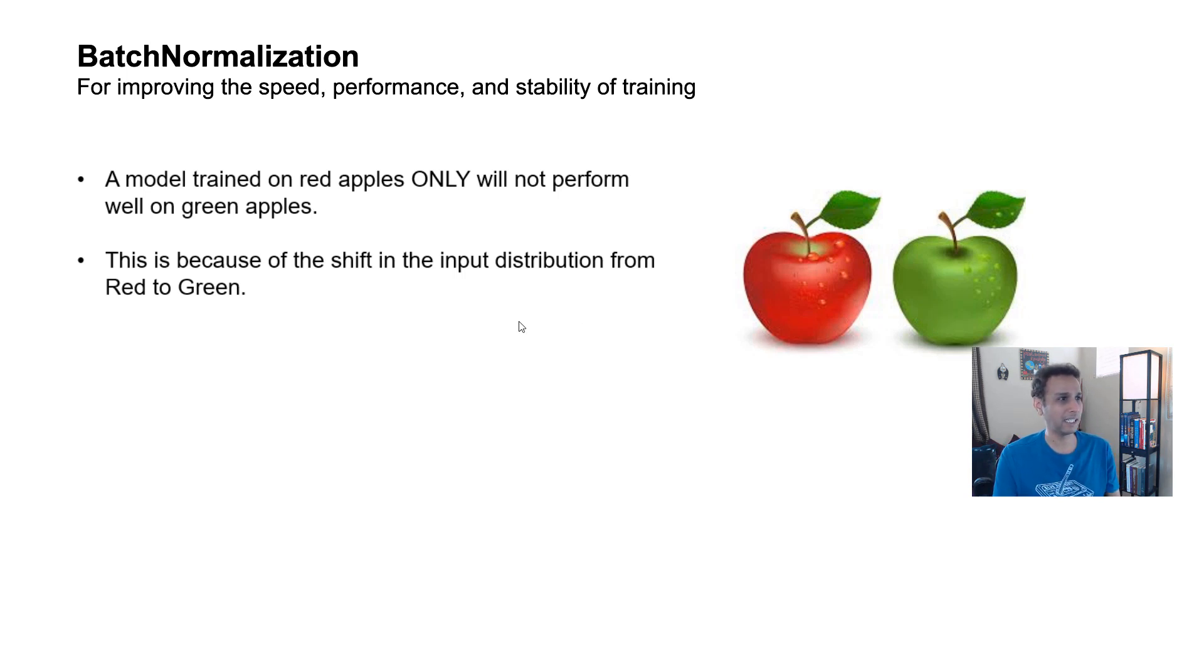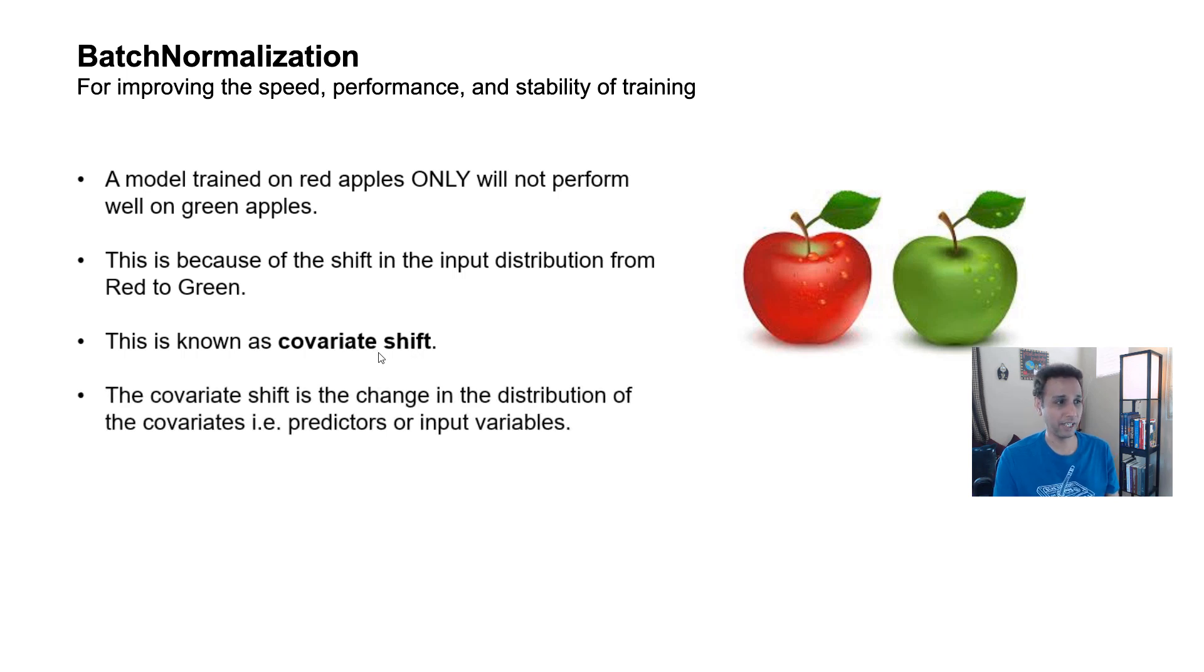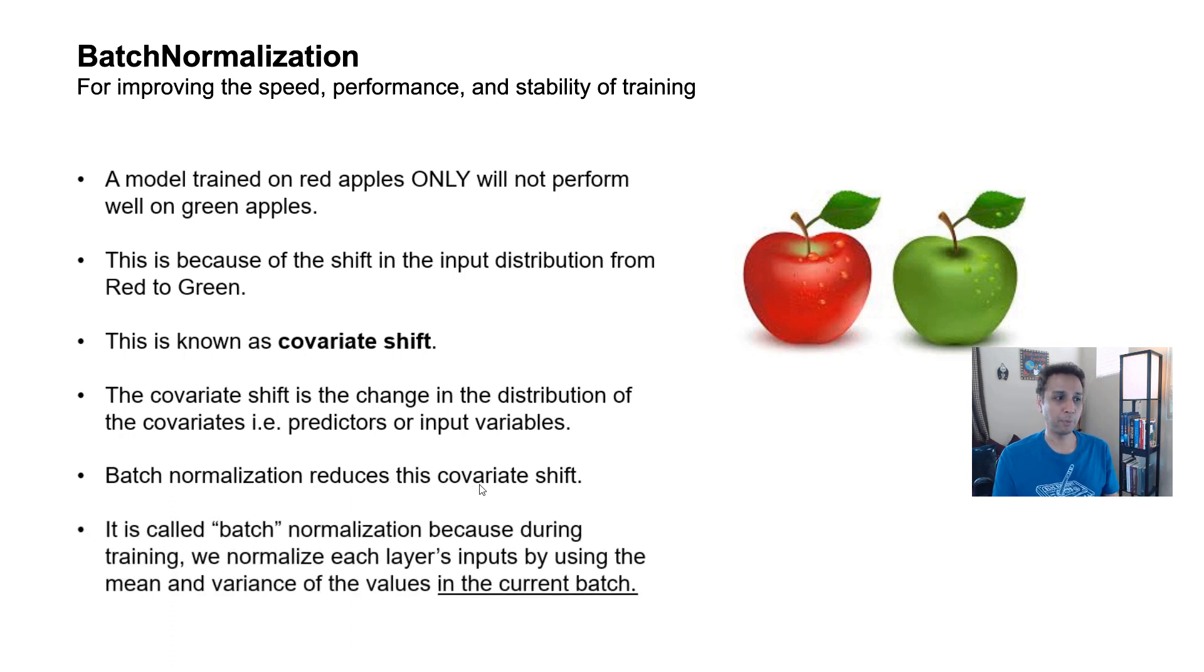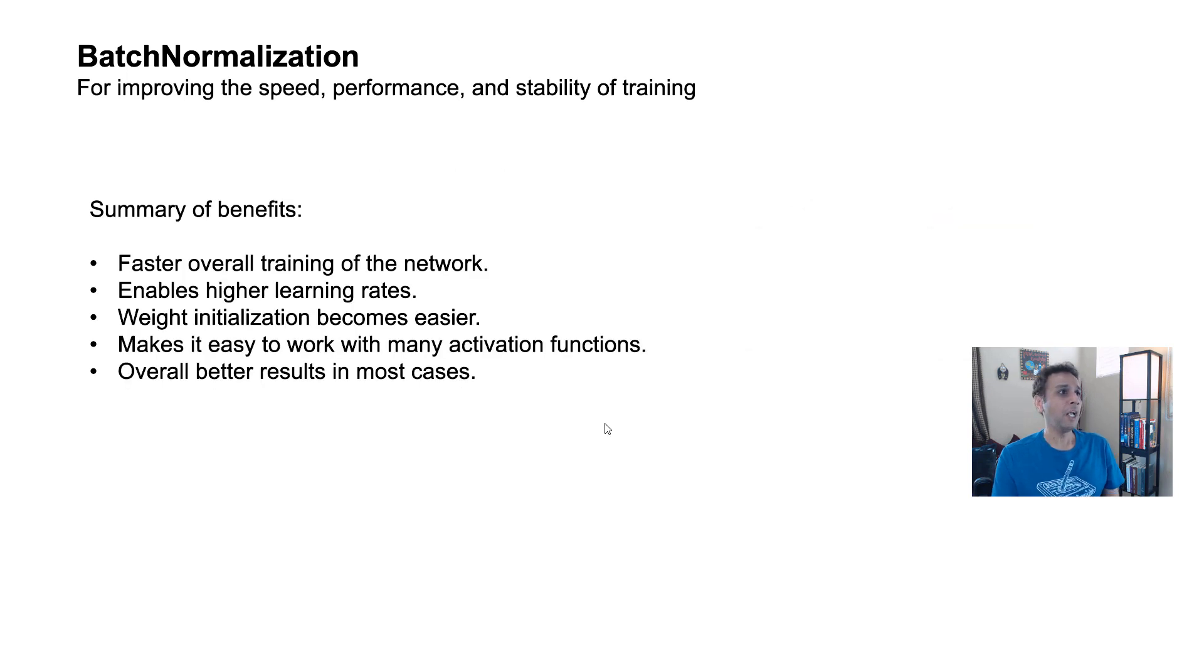This is referred to as covariate shift, and apparently batch normalization really helps with this covariate shift. Batch normalization reduces the covariate shift, which means your training is going to be a bit more stable. And why is it called batch normalization? Because during the training process, it's actually applying it or working on a single batch of images that is actually going into your training process.